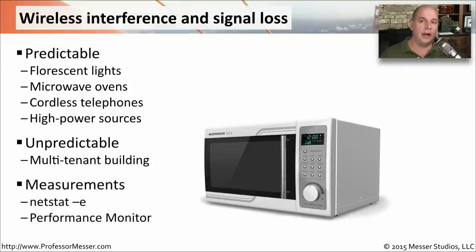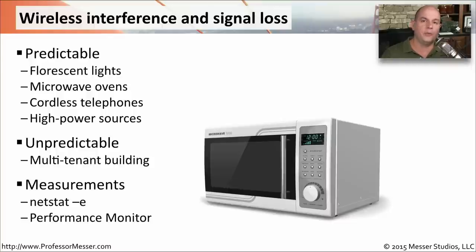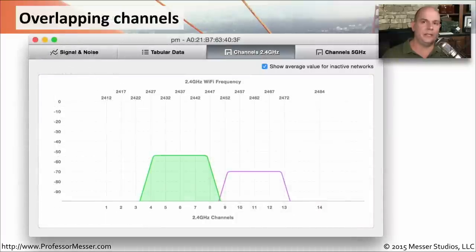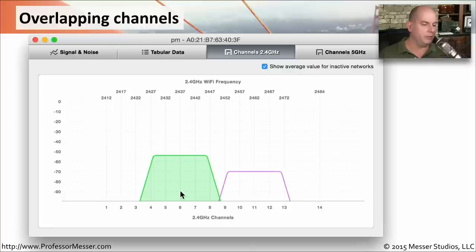There are tools in your operating system to get statistics and information about how well you're receiving wireless signals. You can run netstat -e or use Performance Monitor to get a long-term view of wireless network performance over time. Finding the right frequencies to use can be a challenge. Using a wireless analyzer, you can see — for example — someone on channel 6 and someone on channel 11 in the 2.4 gigahertz range, with no overlap between them and each having their own frequency space.